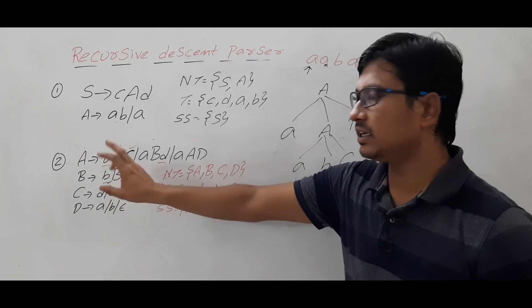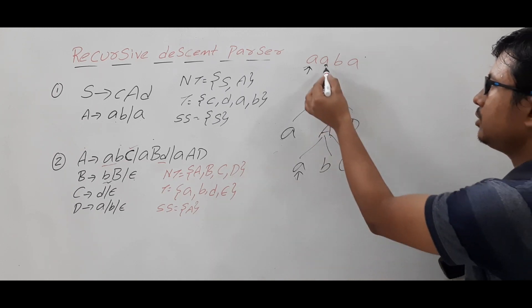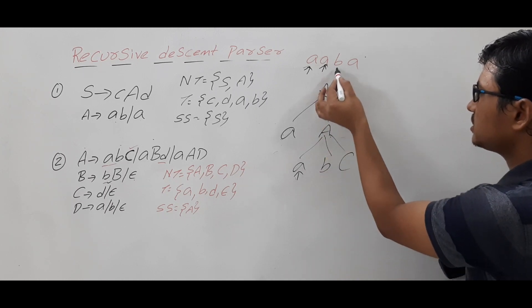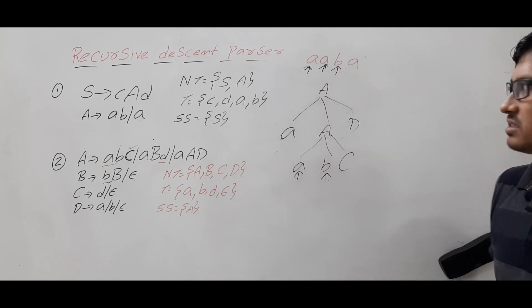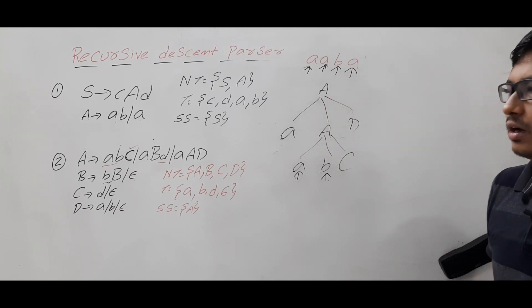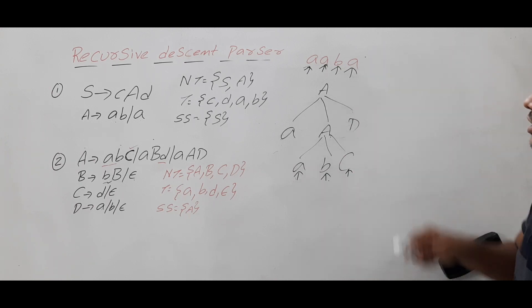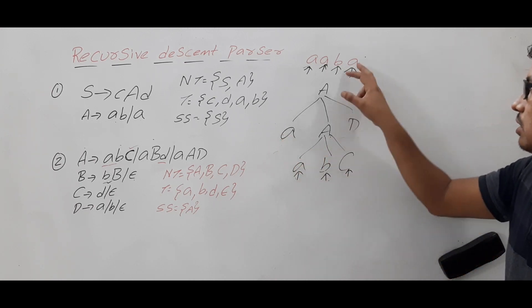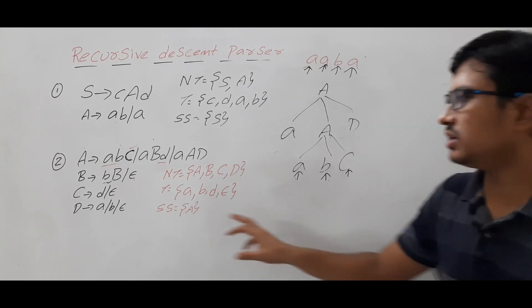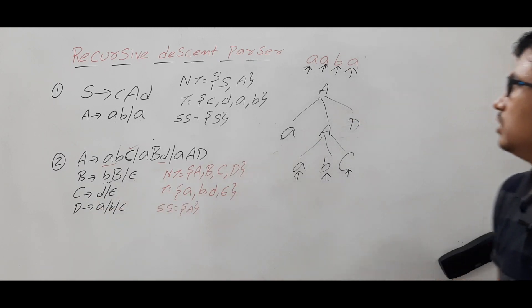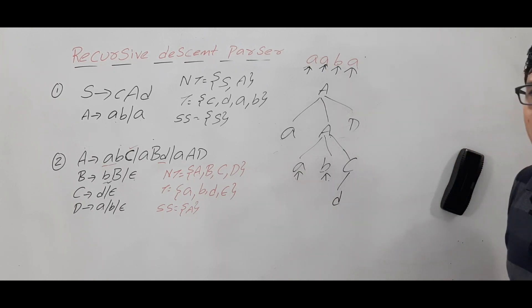Using A → BC: the descent pointer is pointing to 'a' and the input pointer is also at 'a' — a match. Both shift. Now descent pointer is at B and input pointer is at 'b' — there is a match. Input pointer shifts. Now C is a non-terminal, and the input pointer is pointing to 'a'. C is a non-terminal, so it uses a production for C.